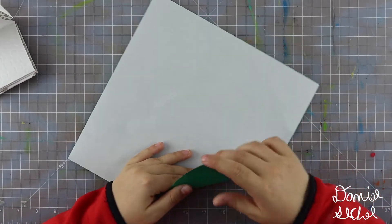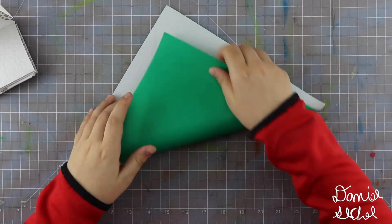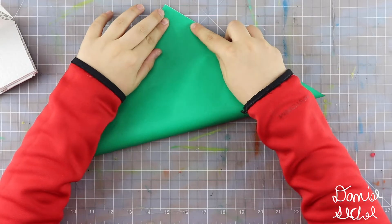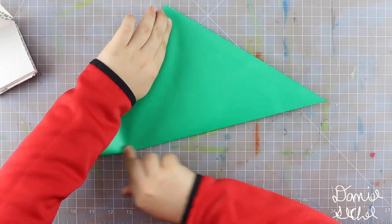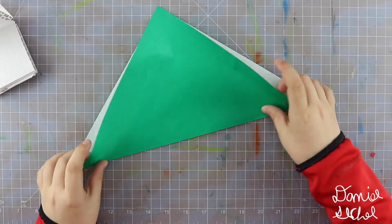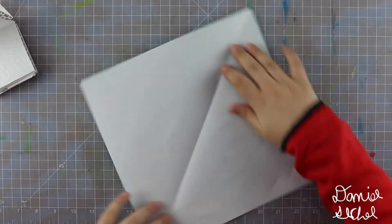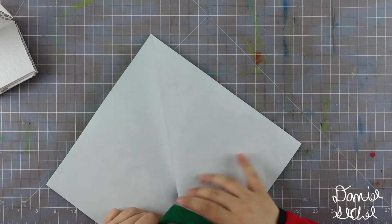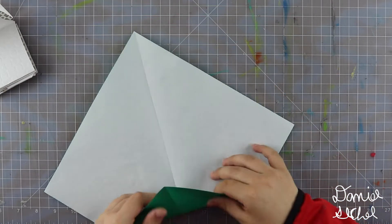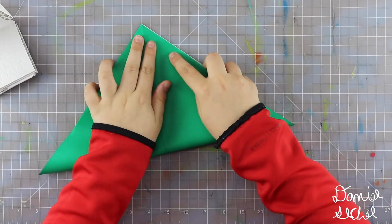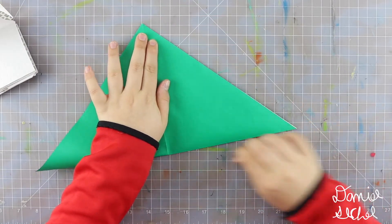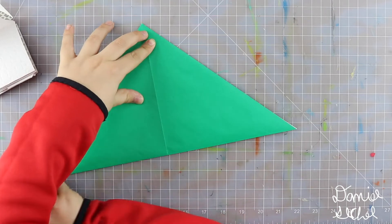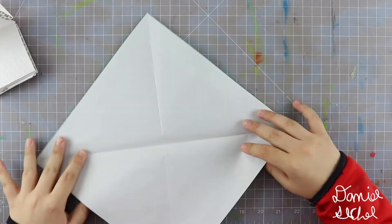Start by folding this point to that point. Make sure to make really precise folds and crease sharply. Unfold, rotate, and repeat, so this point to that point.